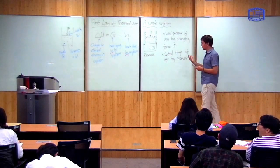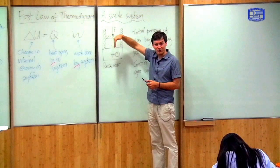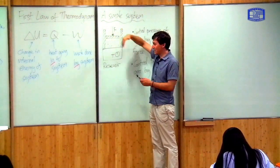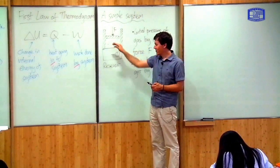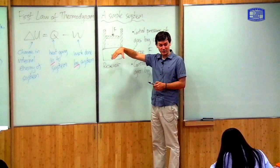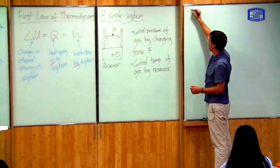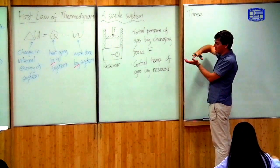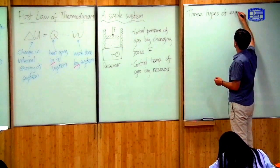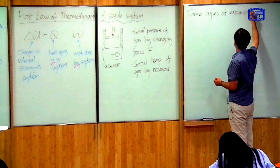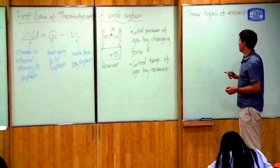We control the pressure of the gas by changing force F, and we control the temperature of the gas by the reservoir. So we imagine we have complete control of this system. We can control it in different ways: increase F and push the gas down, or decrease F and let the gas expand; increase the temperature to increase pressure, or decrease the temperature to decrease pressure. I want to talk about the three different ways in which we can let the gas expand — the three types of expansion — which are important when we talk about the theory of heat cycles.